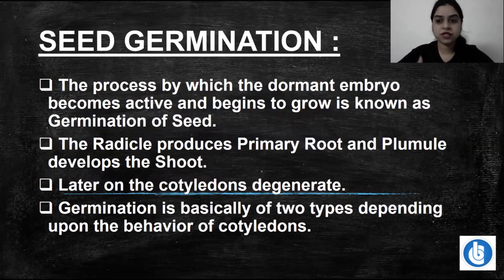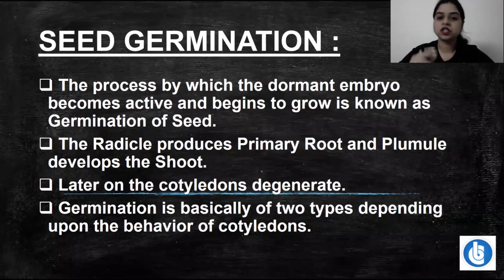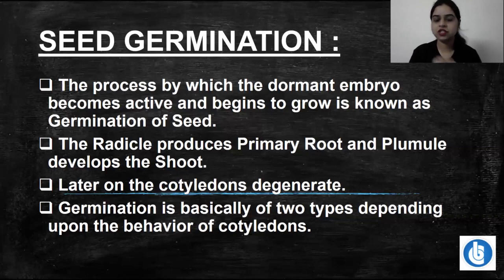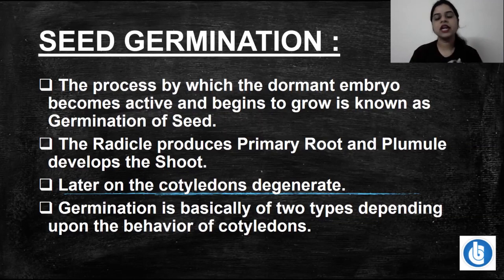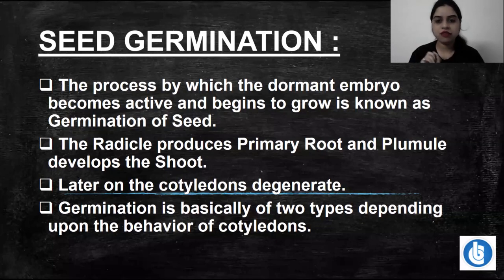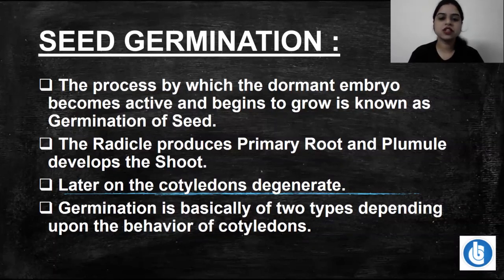Seed germination — how do we define it simply? When the embryo development and seed formation are complete, there are two possibilities: either the seed can germinate, or it goes into a sleeping period — a resting phase — called the dormant stage.